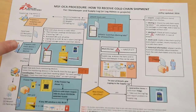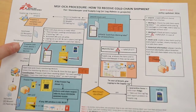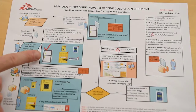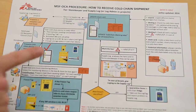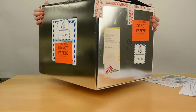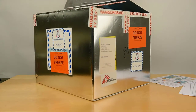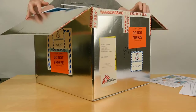The storekeeper checks and prepares the cold chain storage device the items will go into, checking the monitoring devices inside. We open the cold box and check the monitoring devices.